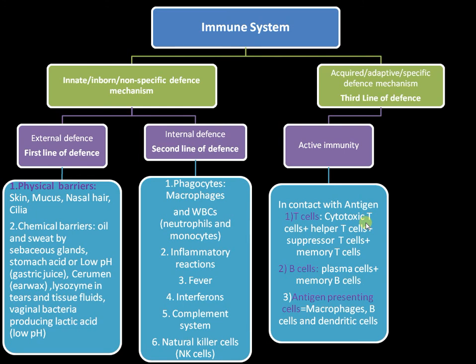The characteristics of active immunity are that it is highly diverse, highly specific, and involves immunological memory, allowing it to mount a secondary immune response. T-cells carry out cell-mediated immunity, while B-cell mediated immunity is called humoral immunity, as B-cells produce antibodies that are secreted into the bloodstream.